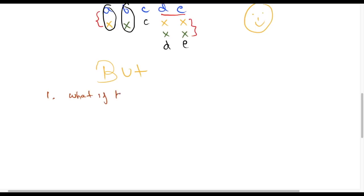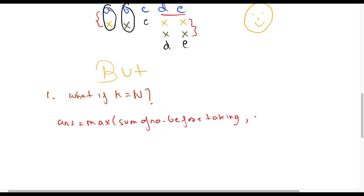The first case is: what if K equals N? In this case the answer will be the maximum of either the sum of all numbers before taking XOR, or the sum of all numbers after taking XOR of all of them with X.